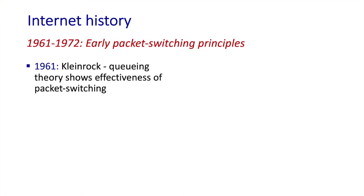In 1961, the telephone network was the world's dominant communication network. The telephone network uses circuit switching to transmit information from sender to receiver, which was probably an appropriate choice given that voice is generated and transmitted at a constant rate.